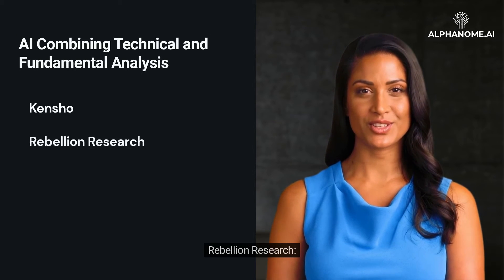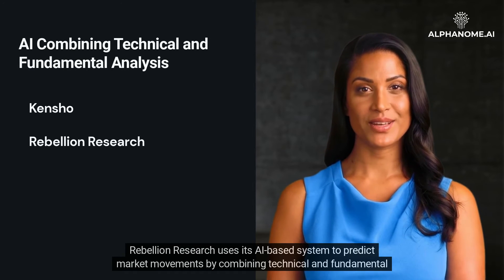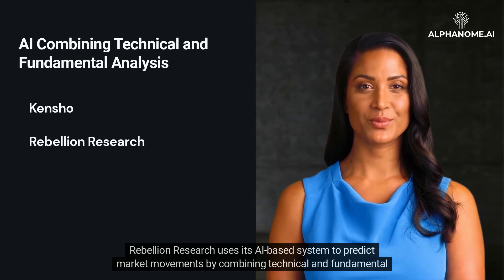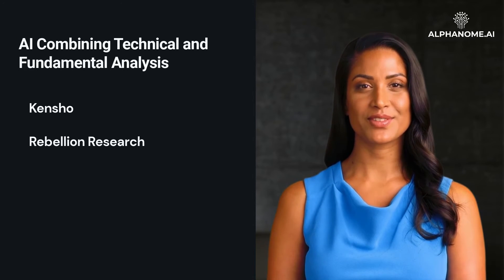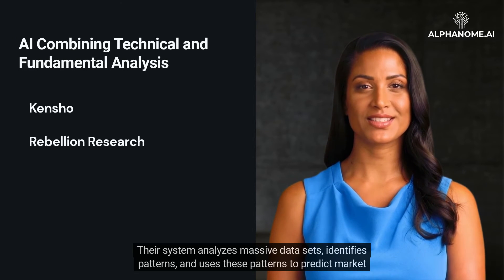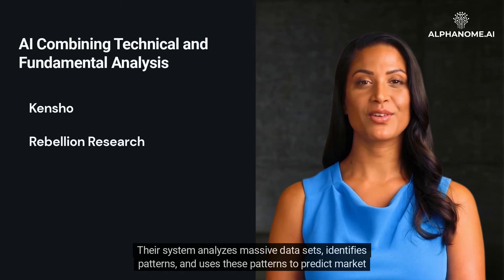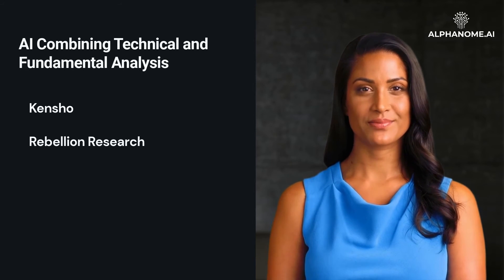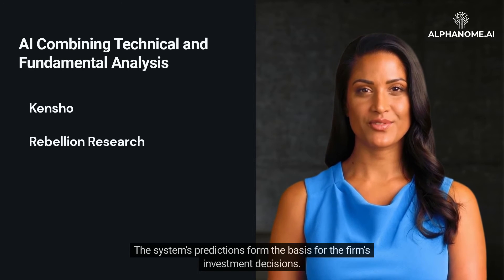Rebellion Research uses its AI-based system to predict market movements by combining technical and fundamental analysis. Their system analyzes massive data sets, identifies patterns, and uses these patterns to predict market trends. The system's predictions form the basis for the firm's investment decisions.